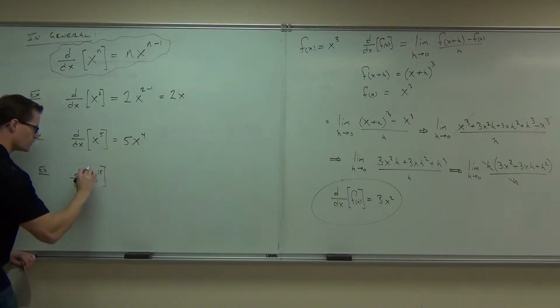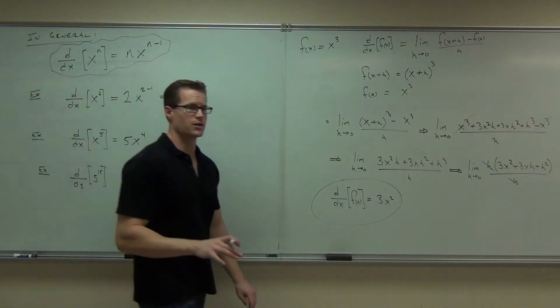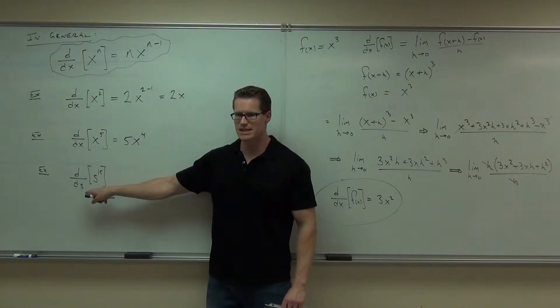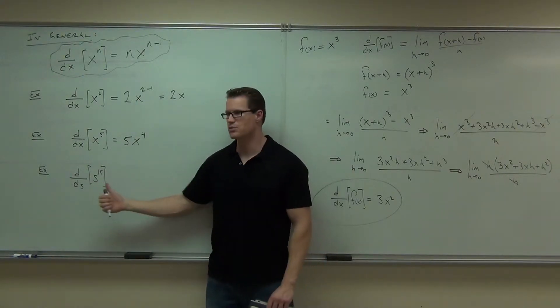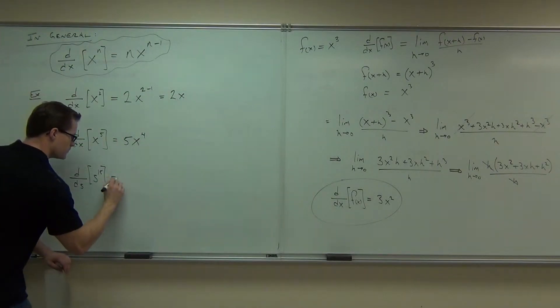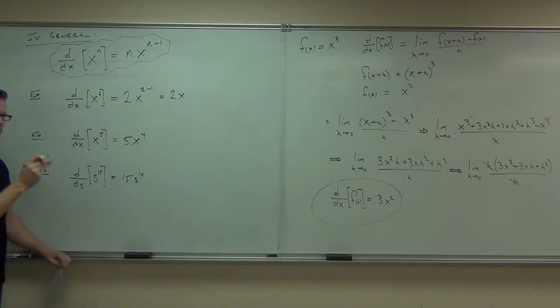Here's one you definitely don't want to do. d/ds of s to the 15th. Notice one thing on the notation. Do you notice how this has to change with the variable that I have? So it's not d/dx anymore, it's d/ds, derivative with respect to s, and then I'll give you the variable. So s to the 15th. What's this one? Sure, very quick, very, very fast.